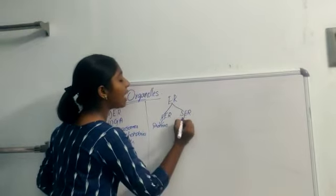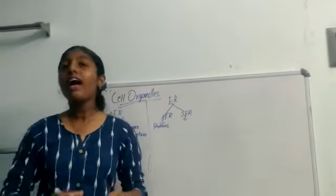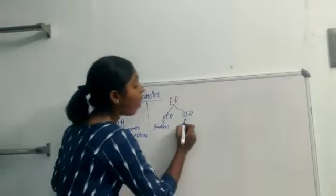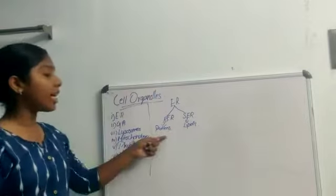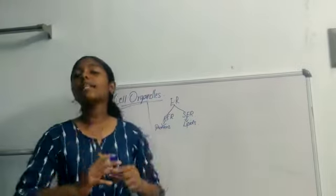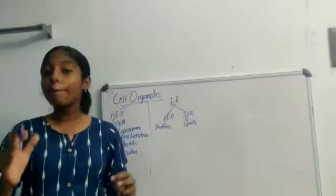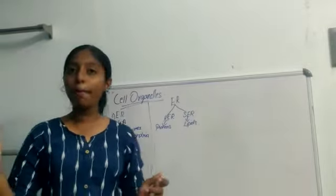And this SER helps in the manufacture of fat molecules or lipids. So these manufactured proteins and lipids help in the building of cell membrane or the plasma membrane.